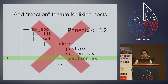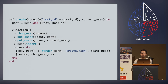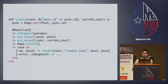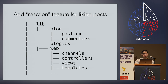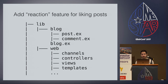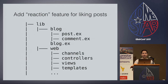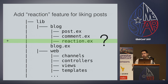Let's do a thought experiment based on adding a feature — a reaction feature for liking posts. Prior to Phoenix 1.2, the mode of operation would be: I have a web models directory, I know I want to put this in Postgres, so I just add a reaction.ex file and now I have three models. But you're not thinking about the boundaries — how this relates to the application. You'd then have to put_assoc in the controller, associating multiple things, and the controller is concerned with not only how data is inserted, but how to associate it.